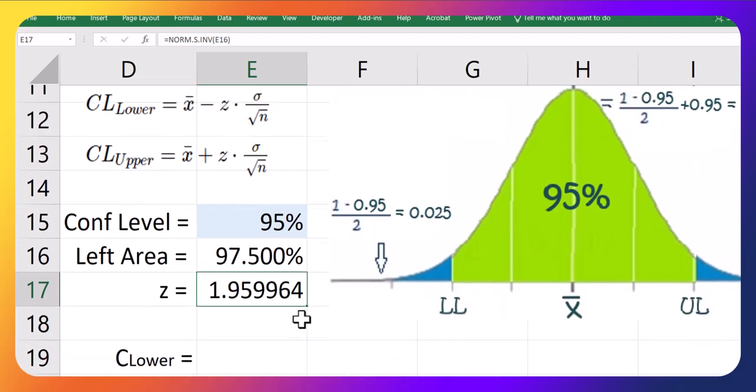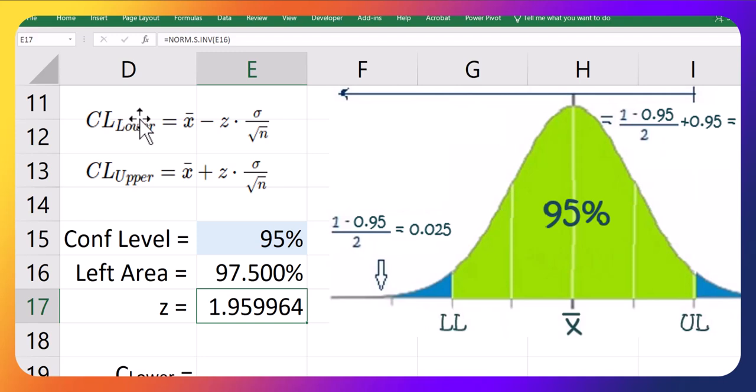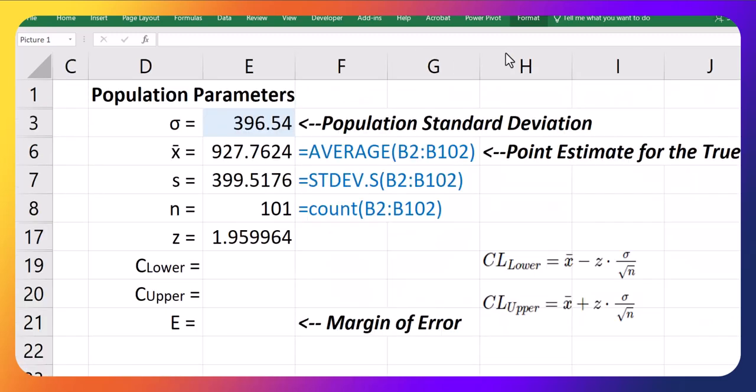Okay, and now we're ready to start building up these lower and upper limits using this formula. Okay, so I'm just going to hide some rows here so we can see all the values that we need all at once. Beautiful.